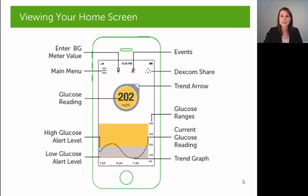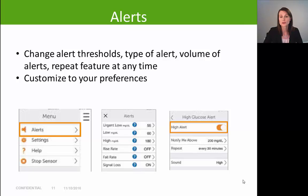In the upper right-hand corner of the home screen you have a Dexcom Share symbol shown as a little triangle, which we'll be reviewing in a moment. To change alerts on your G5 app at any time, select the main menu icon in the upper left-hand corner, select 'Alerts,' and then select the alert you'd like to modify. There you can turn the alert on and off, change the alert threshold, and change the sound for that alert — so you can really customize alerts to meet your individual needs and preferences.